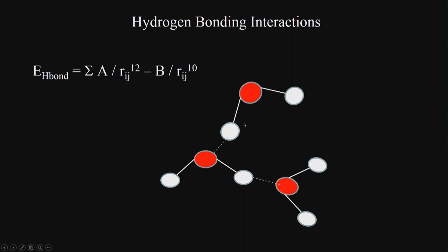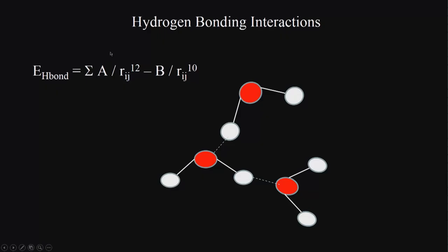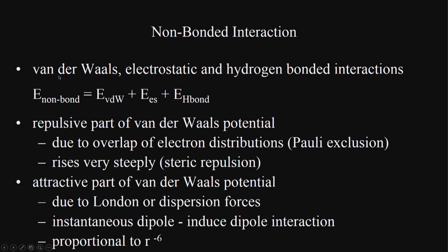Hydrogen bonding is a very important term because many ligand-protein interactions are based on hydrogen bonds. They have a different form of equation compared to van der Waals: using Rij⁻¹² and Rij⁻¹⁰ terms. For example, an oxygen acts as hydrogen bond acceptor and a hydrogen acts as hydrogen bond donor. In water molecules you can have a full network of hydrogen bond formation. Non-bonded interactions can be made up of van der Waals, electrostatic, and hydrogen bonding.